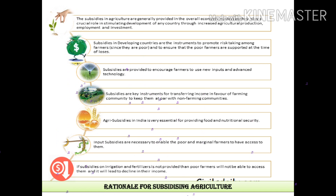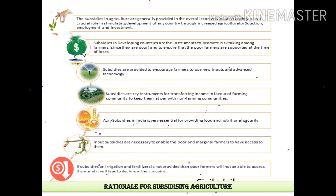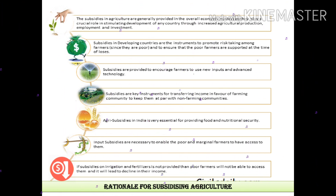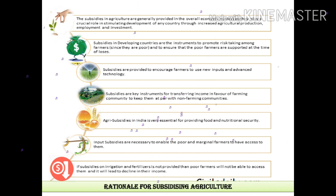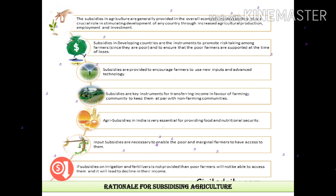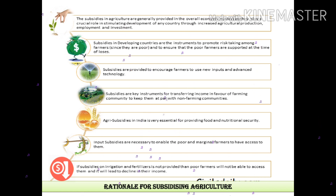The rationale — meaning the reason — for subsidy in agriculture: first, farmers accept the subsidy, which leads to an increase in agricultural production and an increase in employment in the area.